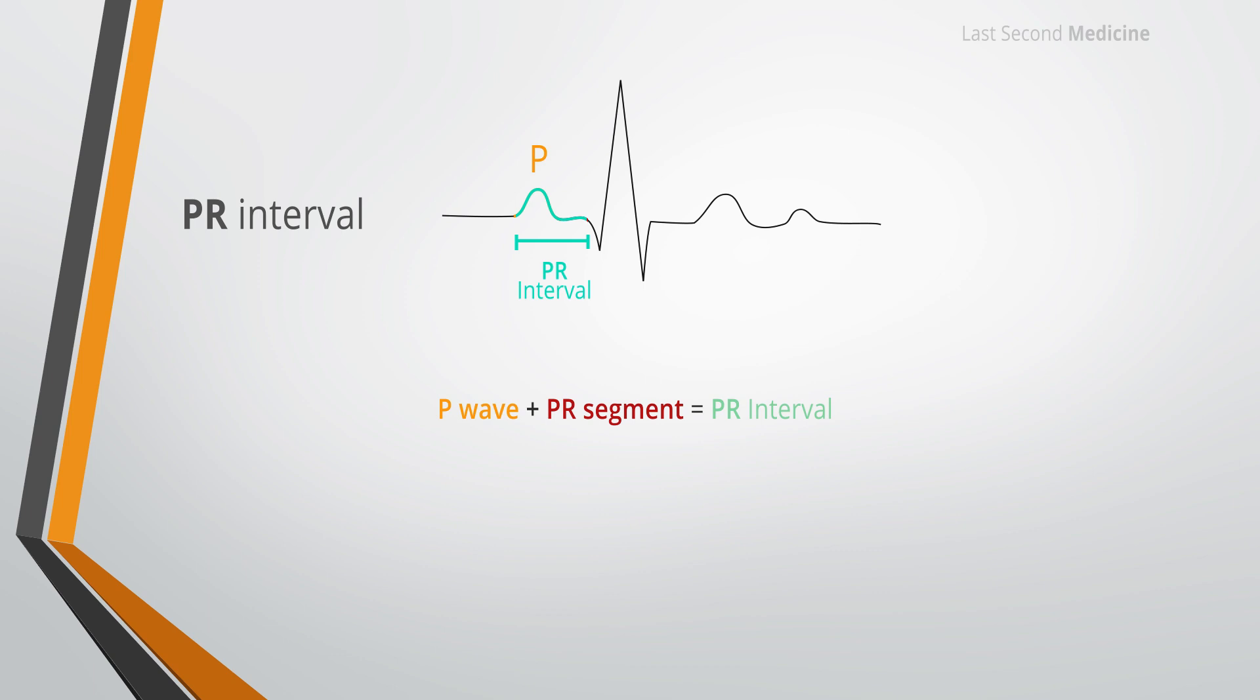This interval indicates the time between the onset of atrial depolarization and the onset of ventricular depolarization. It is measured from the beginning of the P wave to the first deflection of the QRS complex, whether this deflection is a Q wave or an R wave. The normal duration of PR interval is 3 to 5 small squares, or 0.12 to 0.20 seconds. Abnormalities of the conducting system in atria and AV node may lead to transmission delays prolonging this PR interval.